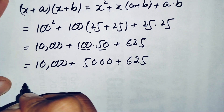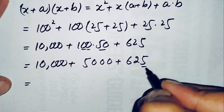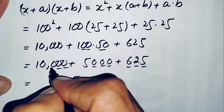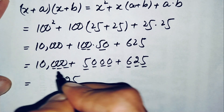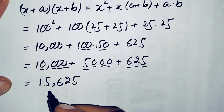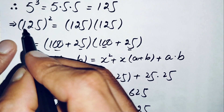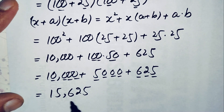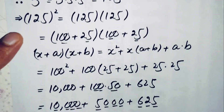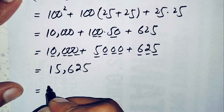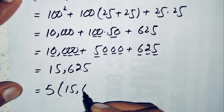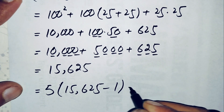Adding all three numbers: starting from the ones position, 5 plus 0 plus 0 is 5, and summing all digits gives us 15,625. So 125 squared equals 15,625. We replace (5 cubed) squared with 15,625, giving 5 times (15,625 minus 1).